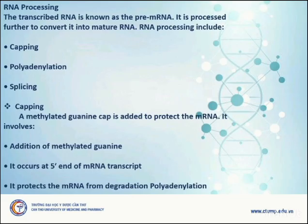RNA Processing. The transcribed RNA is known as pre-mRNA. It is processed further to convert it into mature mRNA. RNA processing includes capping, polyadenylation, and splicing. Capping: A methylated guanine cap is added to protect the mRNA. It involves the addition of methylated guanine and occurs at the 5' end of the mRNA transcript, protecting the mRNA from degradation.